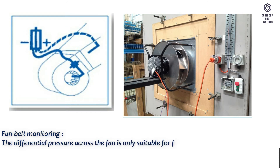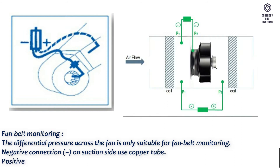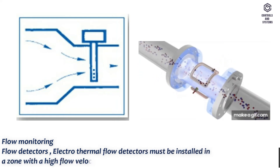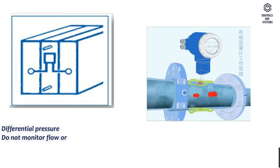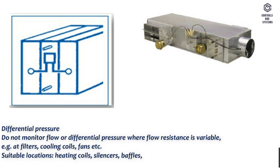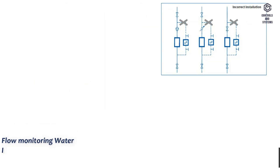For fan belt monitoring, the differential pressure across the fan is only suitable for fan belt monitoring. Use a negative connection on the suction side and a positive connection on the discharge side using a pitot tube. For flow monitoring with flow detectors, electro-thermal flow detectors must be installed in zones with high flow velocity — for example, where pipes narrow. For differential pressure monitoring, do not monitor flow or differential pressure where flow resistance is variable, for example at filters, cooling coils, or fans. Suitable locations include heating coils, silencers, baffles, and attenuators. The formula uses dg as the equivalent diameter.